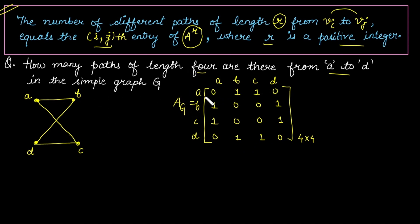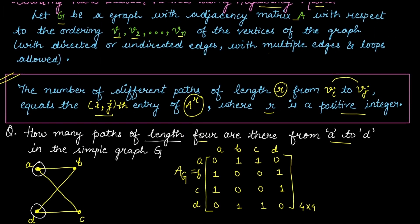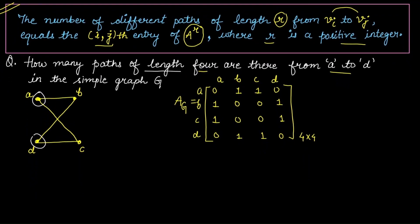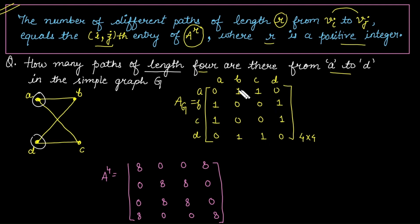To find the number of paths from vertex a to d of length 4, we calculate A raised to the power 4. By the theorem, we need the (i, j) entry where a corresponds to the 1st row and d corresponds to the 4th column — that is, the (1, 4) entry of A^4.